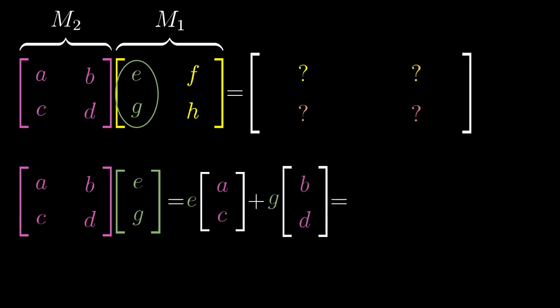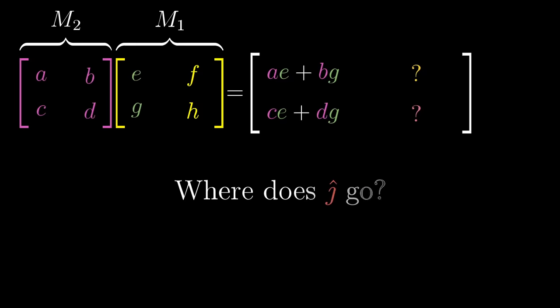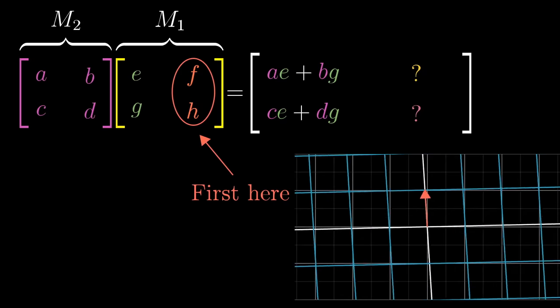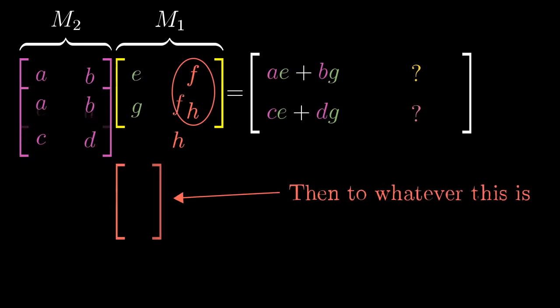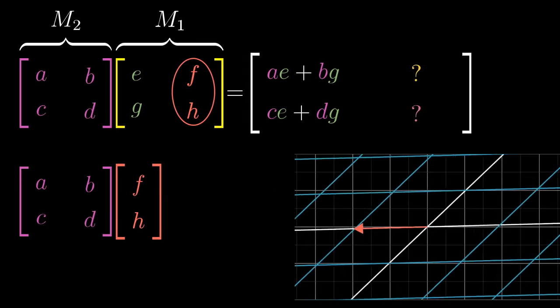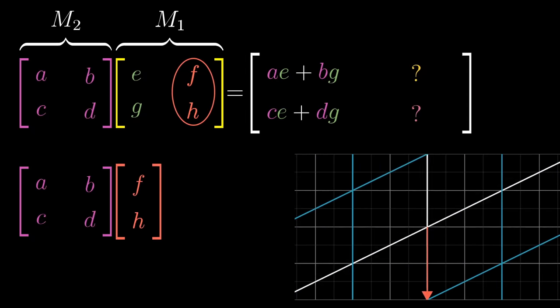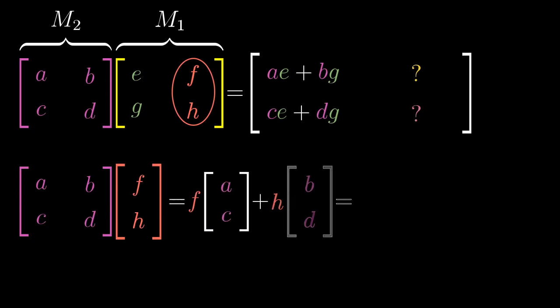So, the first column of the composition matrix will always equal the left matrix times the first column of the right matrix. Likewise, j hat will always initially land on the second column of the right matrix. So multiplying the left matrix by this second column will give its final location, and hence, that's the second column of the composition matrix.